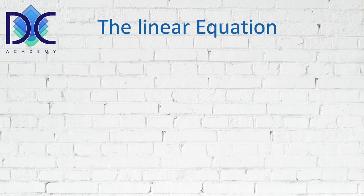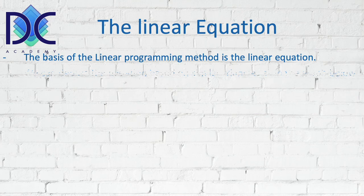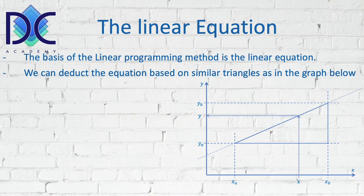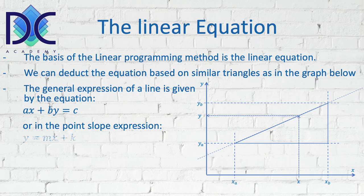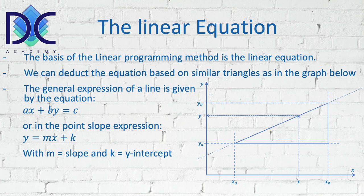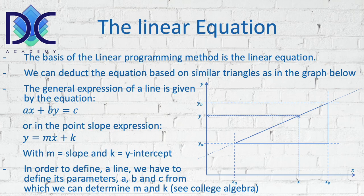When we look at linear programming, the word says 'linear programming,' so we are looking at linear equations and linear properties. We have to look at the definition of a line. A straight line can be expressed by the equation AX plus BY equals C, or in point-slope form as Y equals MX plus K, where M is the slope and K is the Y-intercept. We have a straight line through points (XA, YA) and (XB, YB), and we can determine the equation of that line when we know the parameters A, B, C, or M and K.